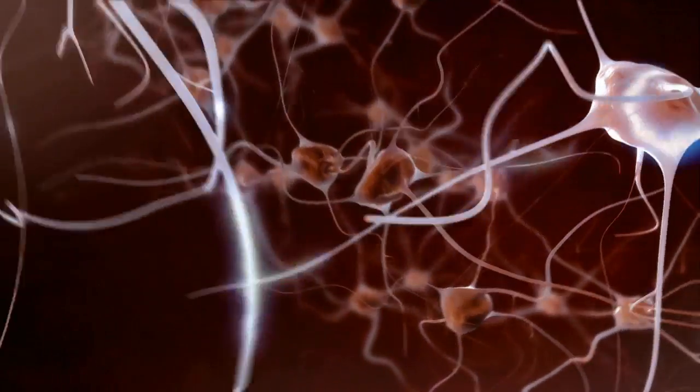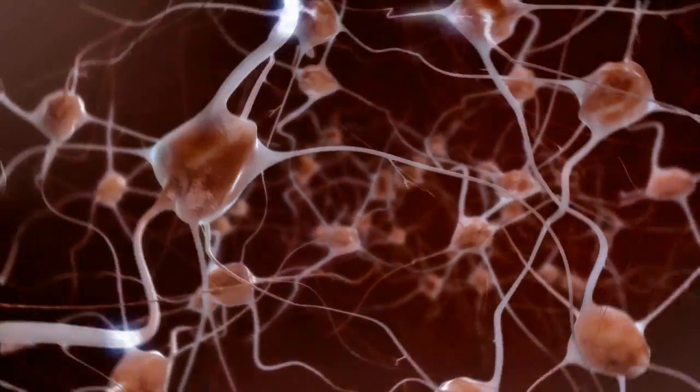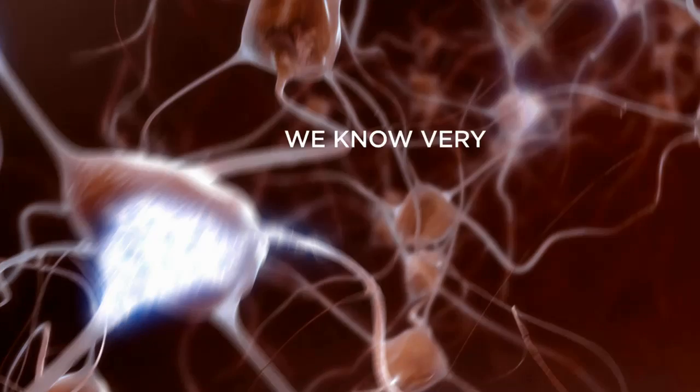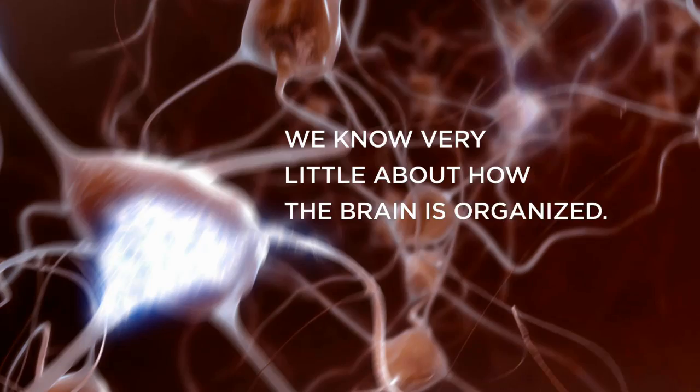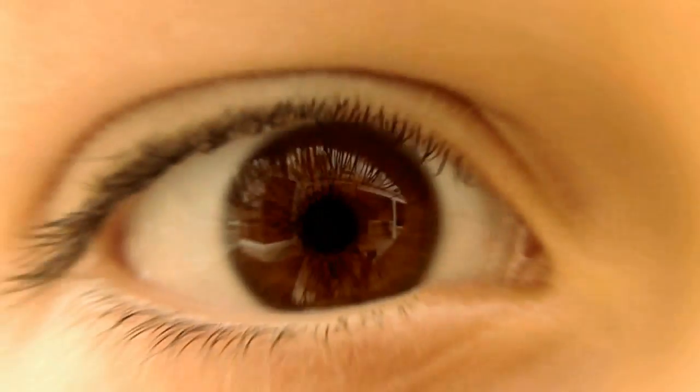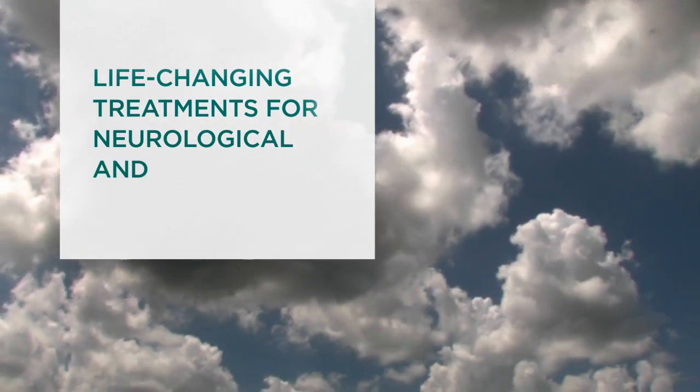Its complexity hard to imagine. 100 billion neurons, each one analyzing and processing information. It's so intricate we know very little about how the brain develops, functions, and is organized. That lack of knowledge has limited our ability to develop life-changing treatments for neurological and psychiatric disorders.